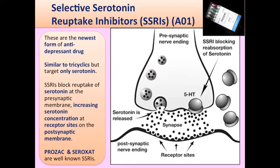Then you've got the selective serotonin reuptake inhibitors — these are the newer forms. You've probably heard of ones like Prozac and Seroxat; they're very well known. They work in kind of the same way, but they just block the reuptake of the serotonin, because they're called selective serotonin reuptake inhibitors. You end up with increased serotonin in the synapse, and the receptors can get more of it, which causes a happier feeling. They're very, very popular.